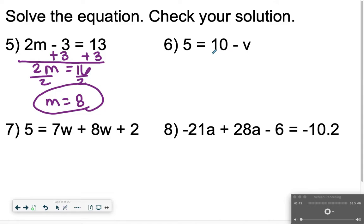Number 6, this one's kind of tricky, so be careful here. I'm going to subtract 10 from both sides. I'm going to get 5 minus 10, which is negative 5, is equal to negative v. Then to get v positive, I need to divide both sides by negative 1. So that v is positive, and negative 5 divided by negative 1 is positive 5.